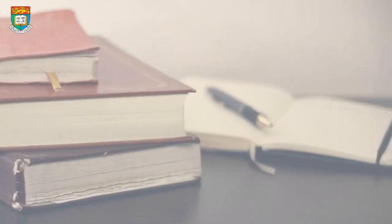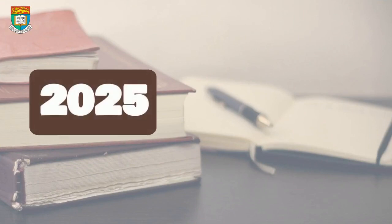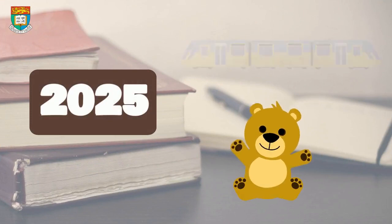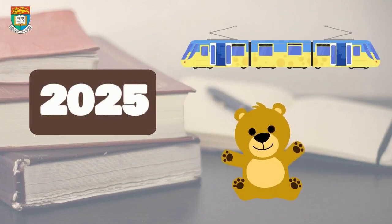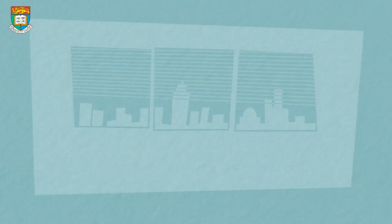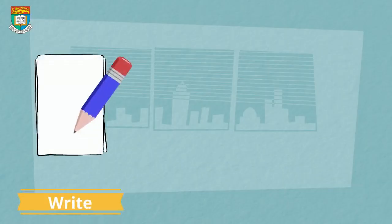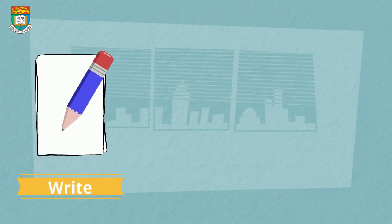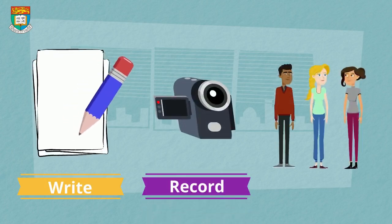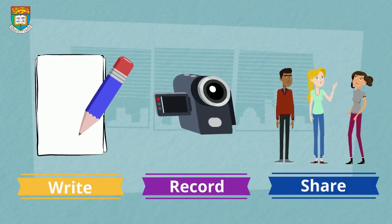The three images are: 1. An image showing 2025. 2. A toy bear. 3. A train. You can choose either to write down this story, record it, or directly tell the story to your friends for feedback.